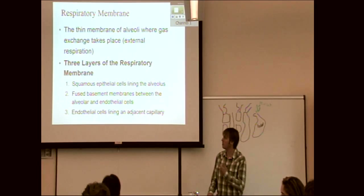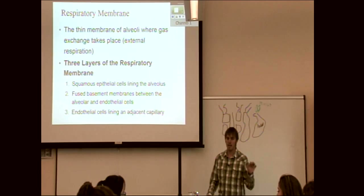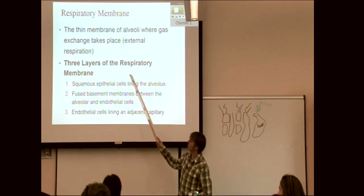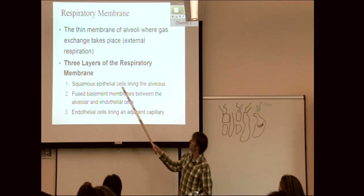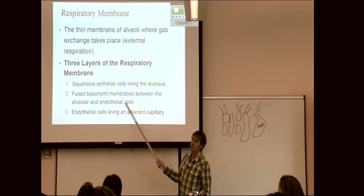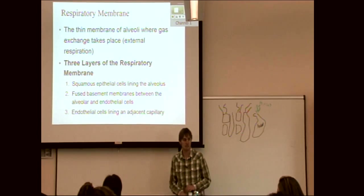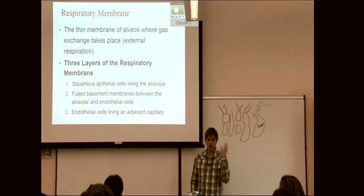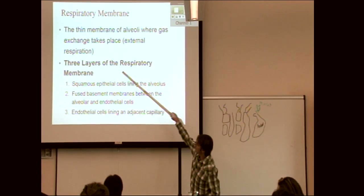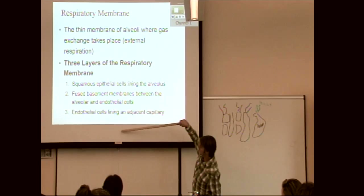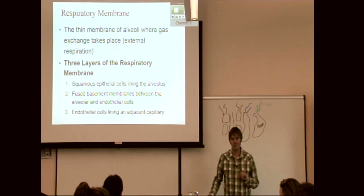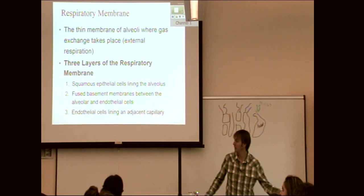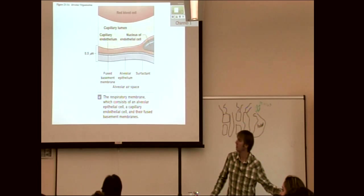The respiratory membrane is the membrane between the alveoli and the capillary. It qualifies as a membrane because it has epithelial cells and connective tissue. It consists of squamous epithelial cells on the alveoli side, two basement membranes, and endothelial cells lining the capillary. Oxygen crosses all three layers from alveolus to blood; CO2 goes the other direction. This is external respiration.